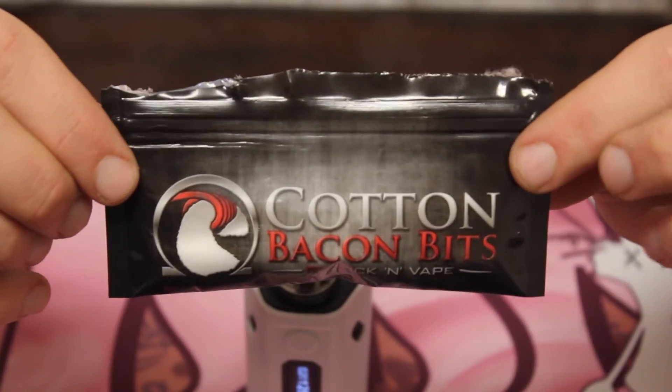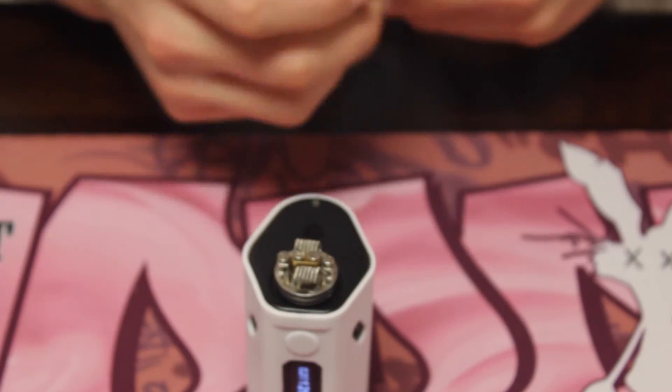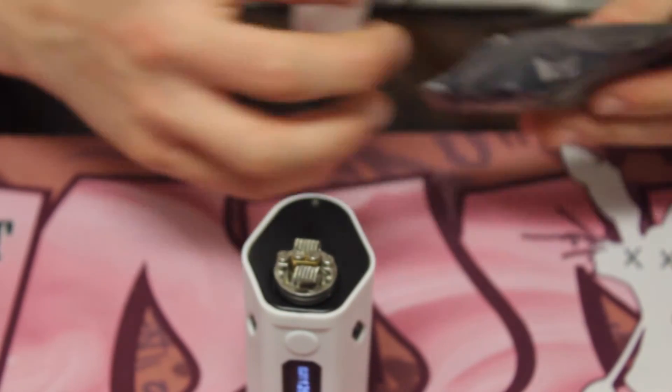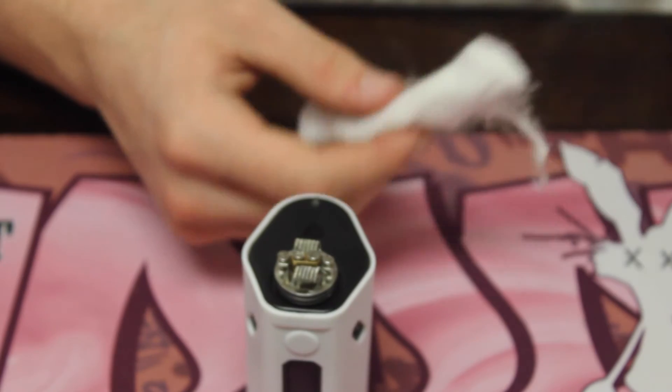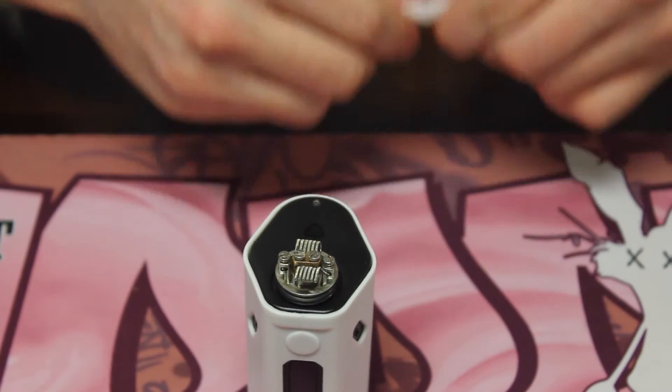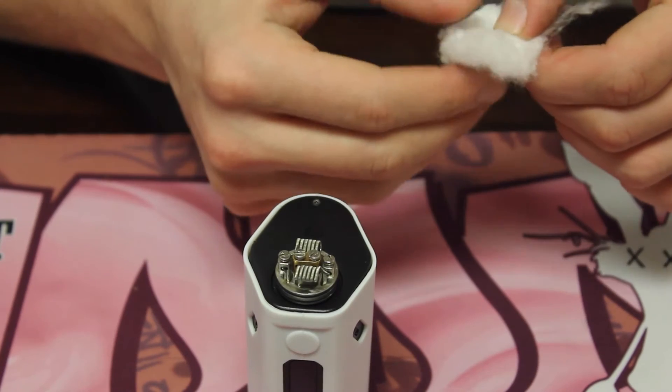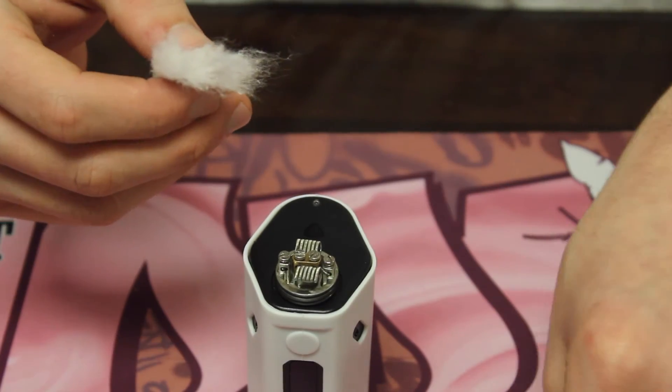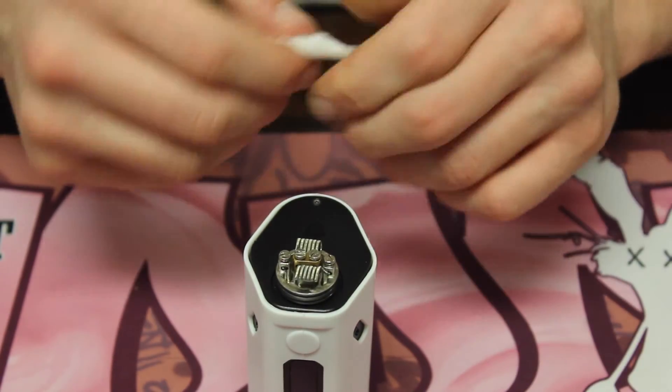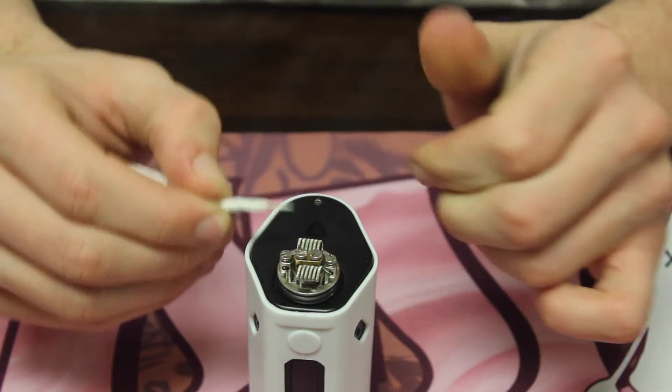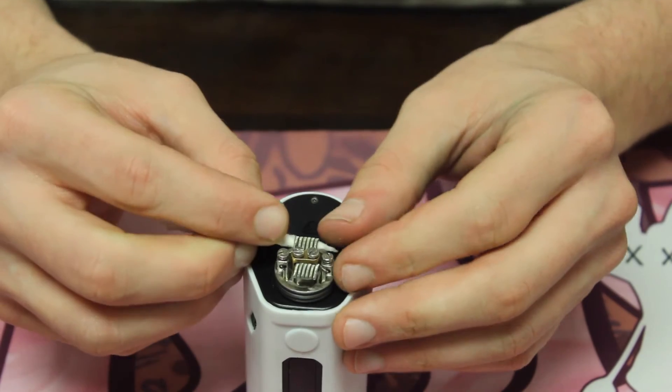Now I'm using cotton bacon bacon bits to wick it with. When you pull it out you're gonna wanna pull out one strip and you're gonna break that strip in half. Once you have that strip broken in half you're gonna break your other strip in half to be able to fit it into the coil. Just twist the end of it until it's nice and thin so you can pull it through that coil. And you want it really really tight when you're trying to pull it through, so it wicks really nicely.